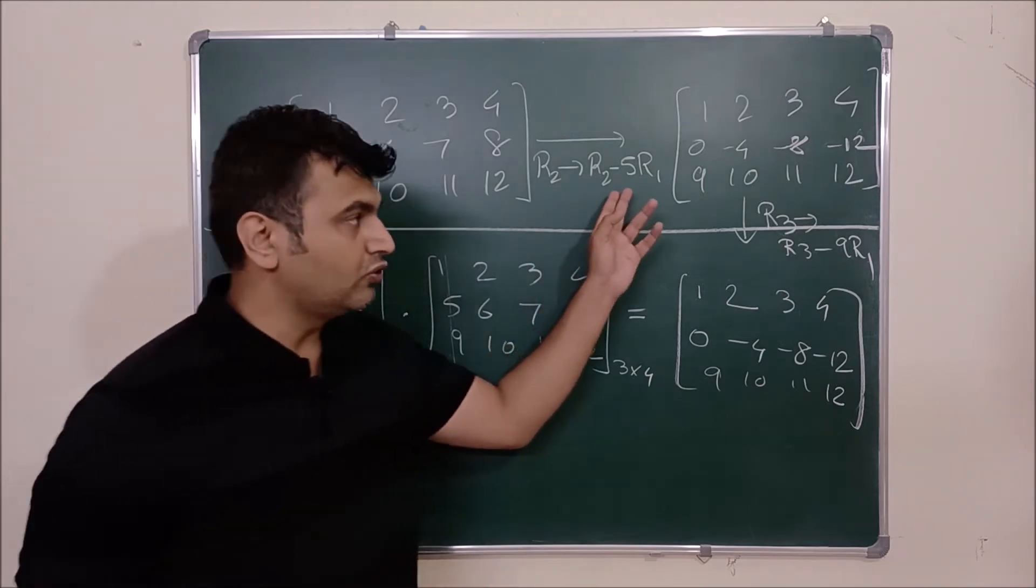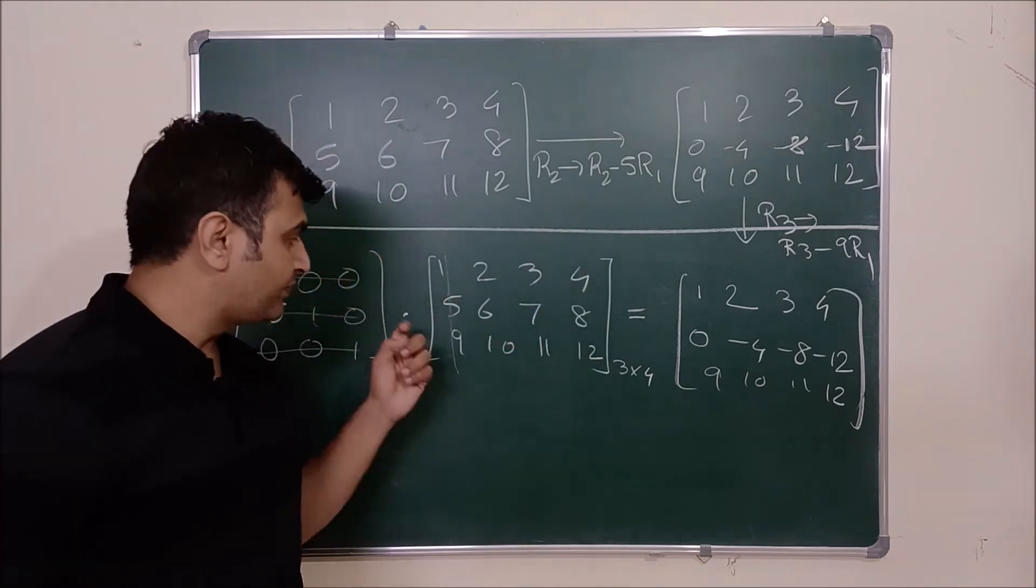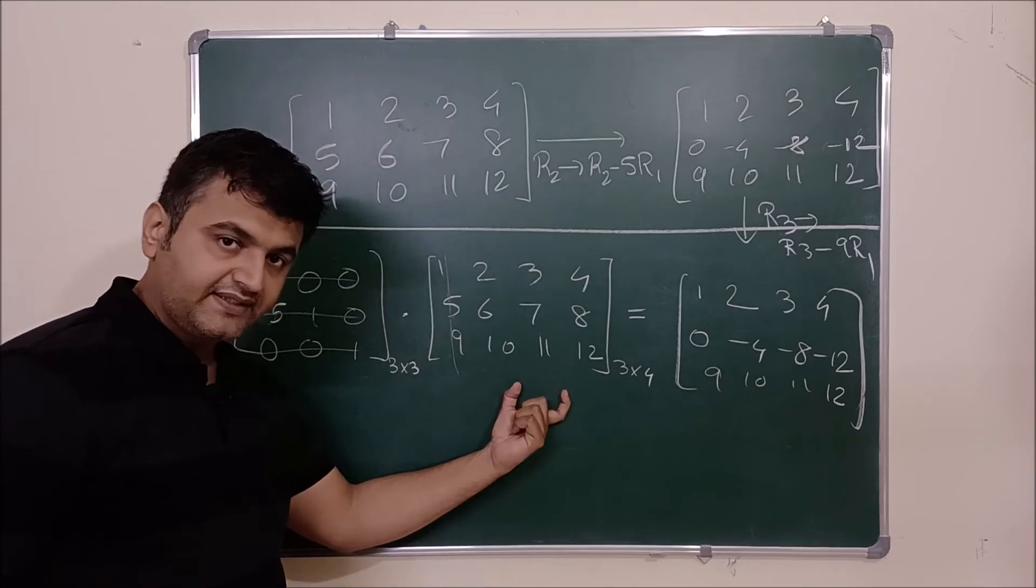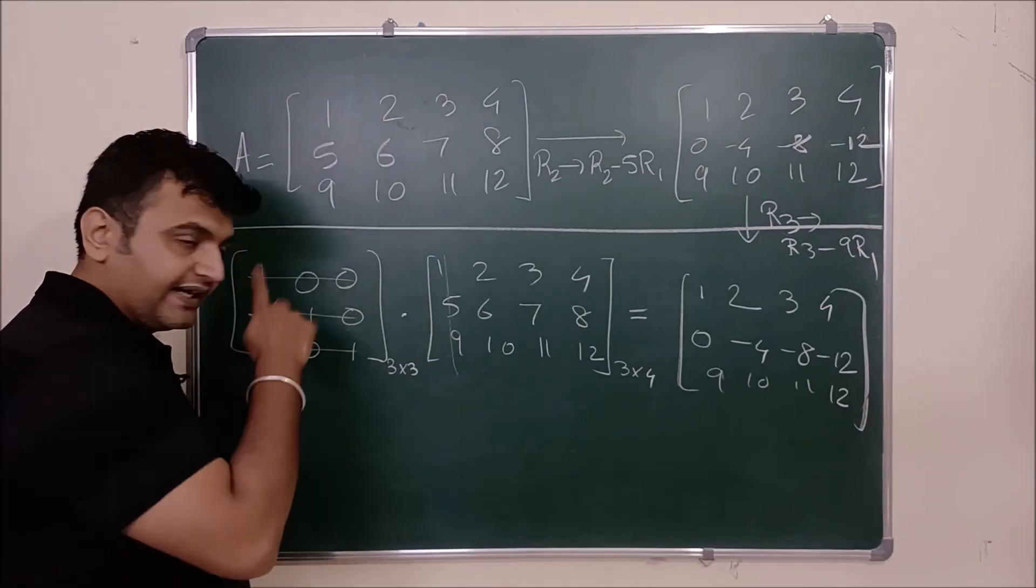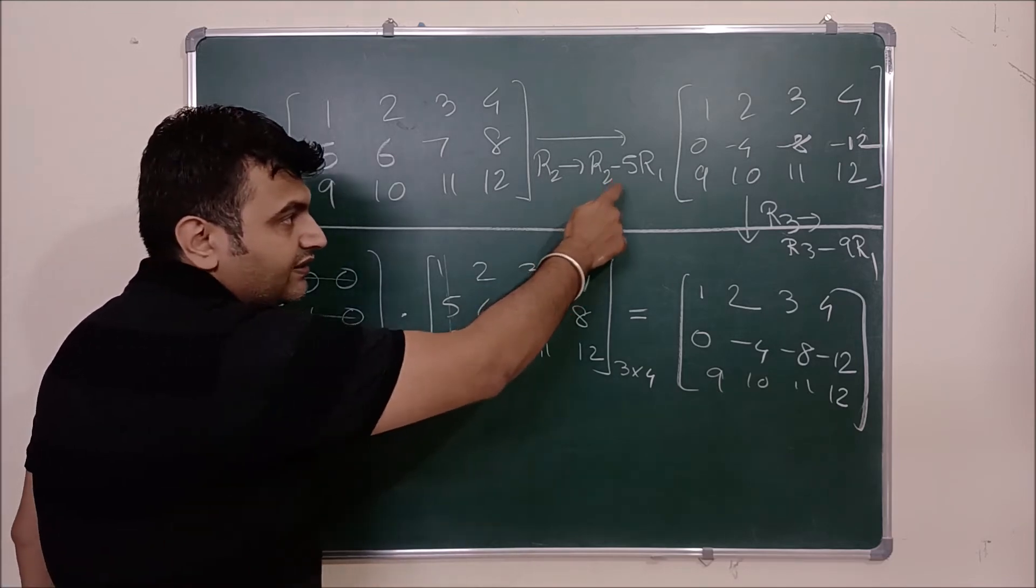So that's why one should know that doing row operation is equivalent to pre-multiply your given matrix with a nice matrix. What is that nice matrix? It's the identity matrix on which you have applied this operation.